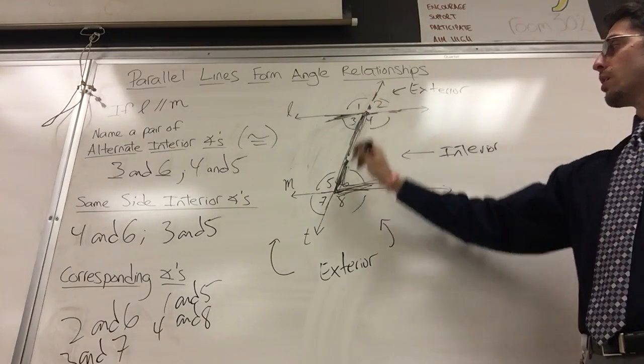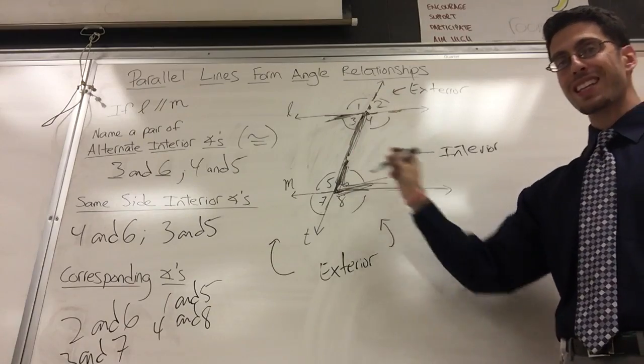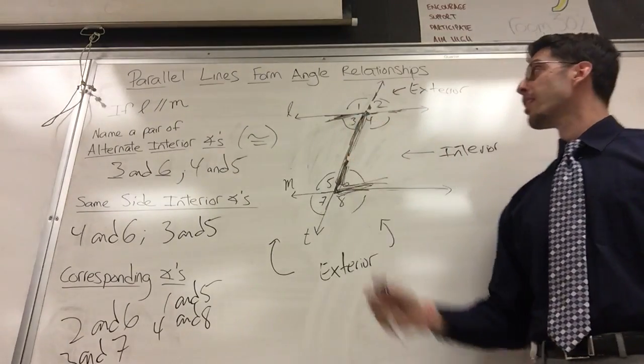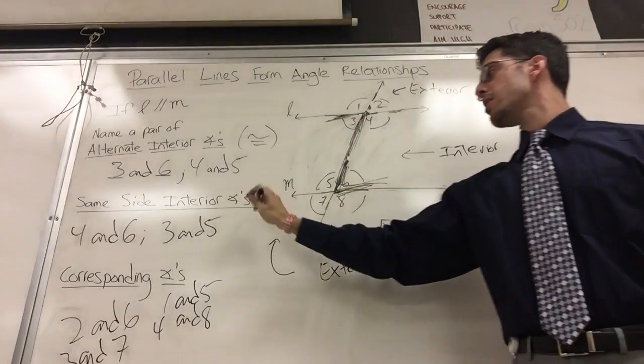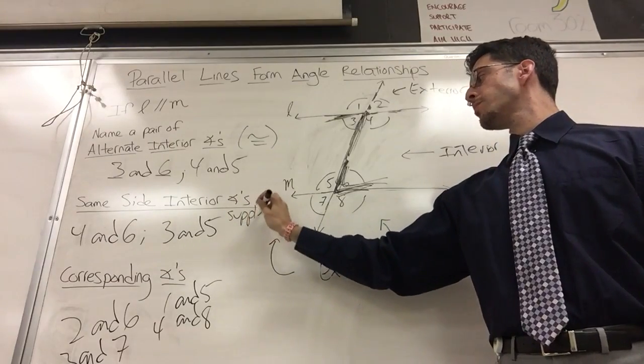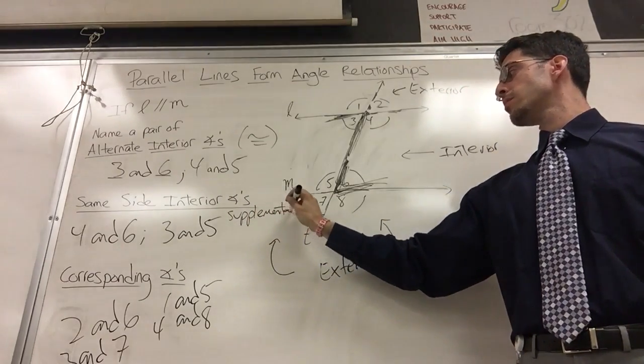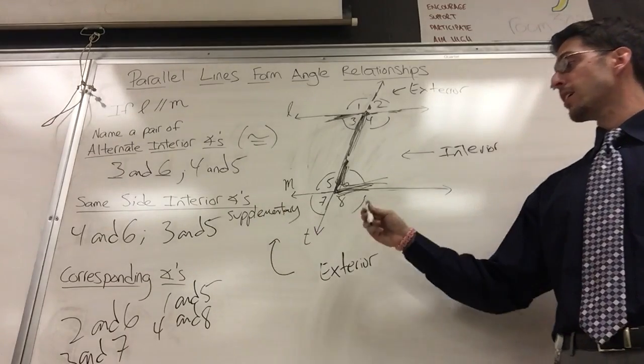Therefore, alternate interior angles are congruent, not supplementary, not complementary. Same side interior, four and six—it's like a C property. See, the letter C makes a C. They are supplementary.